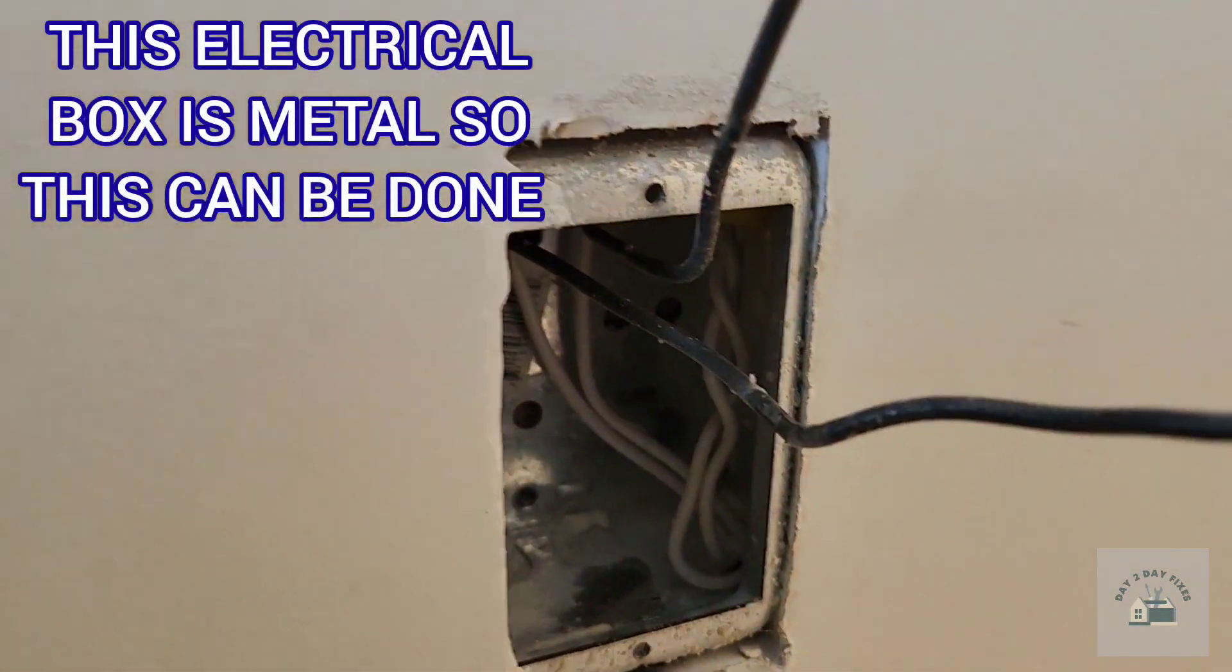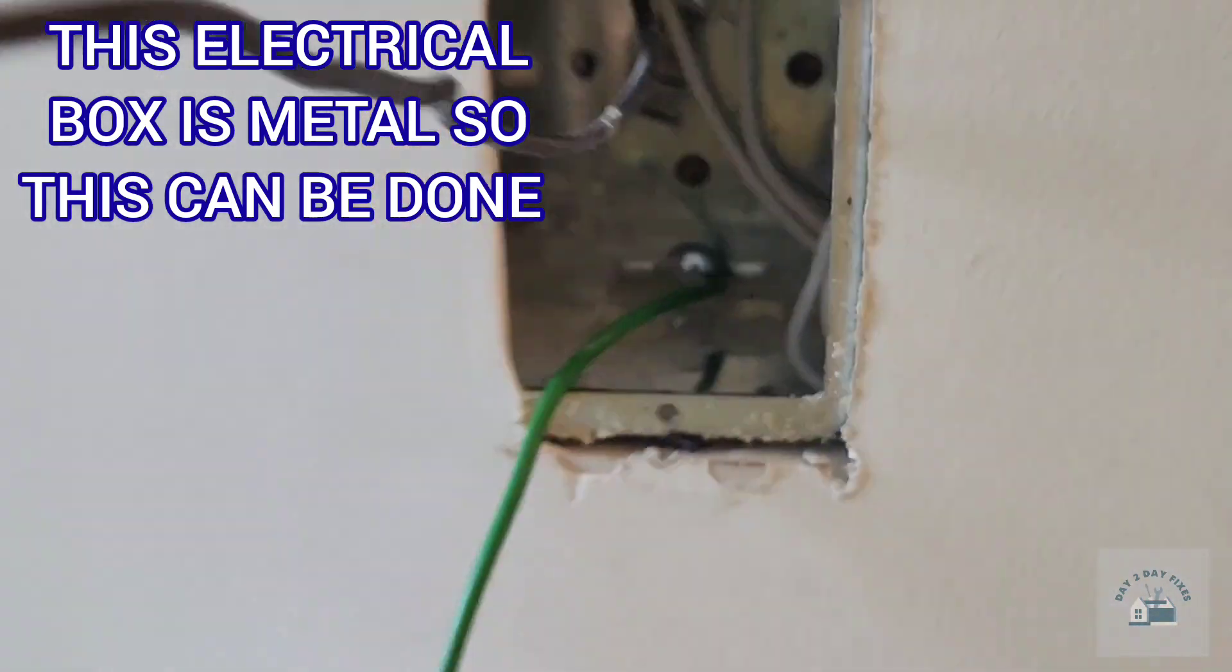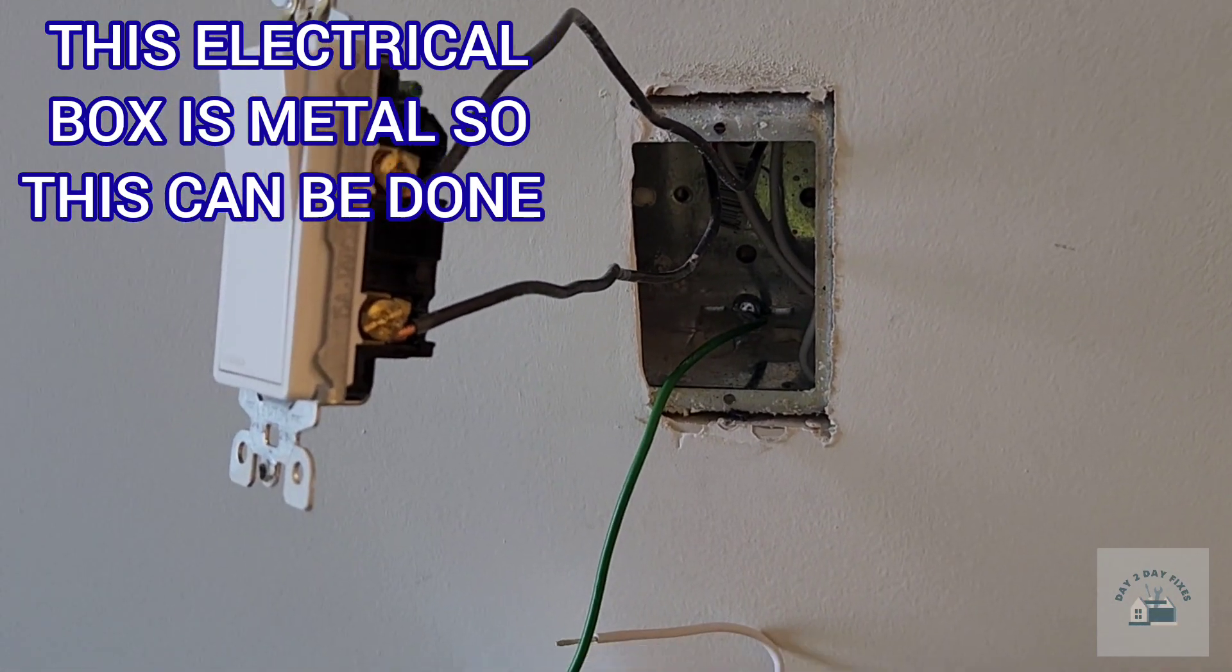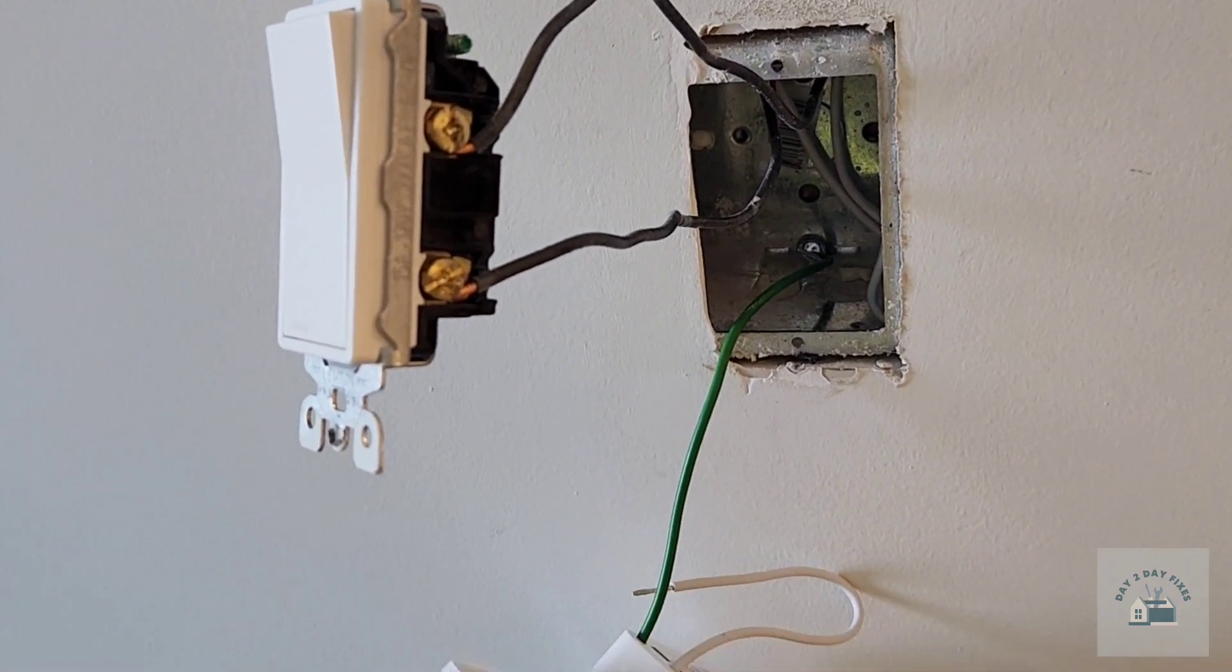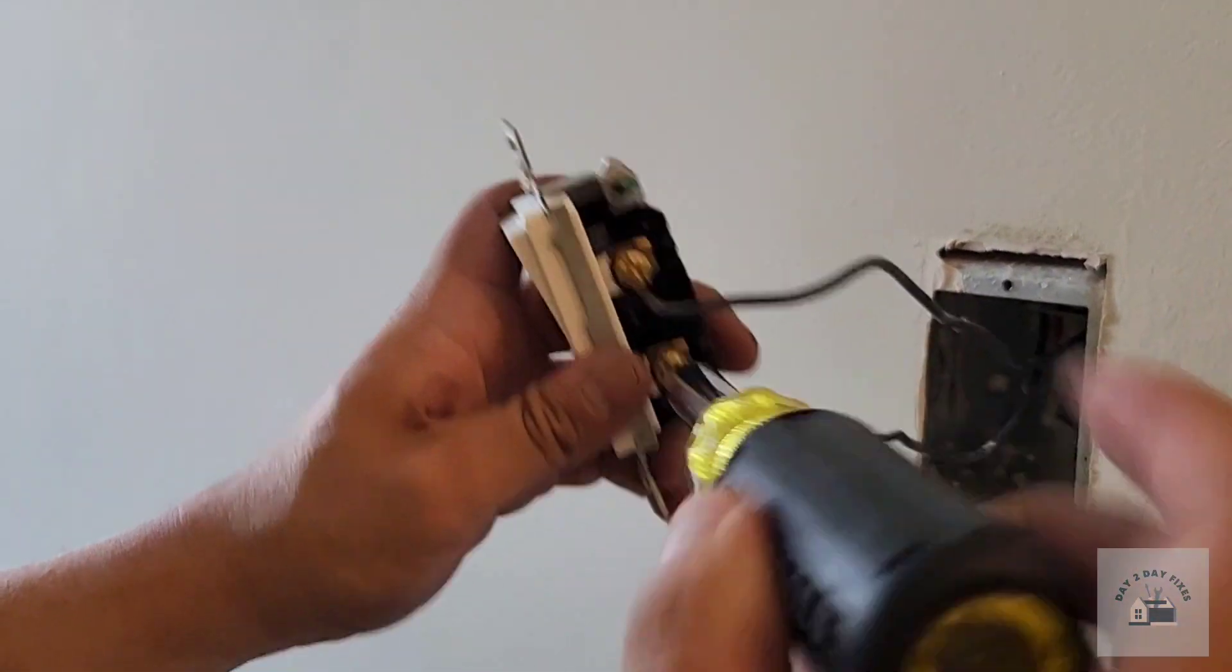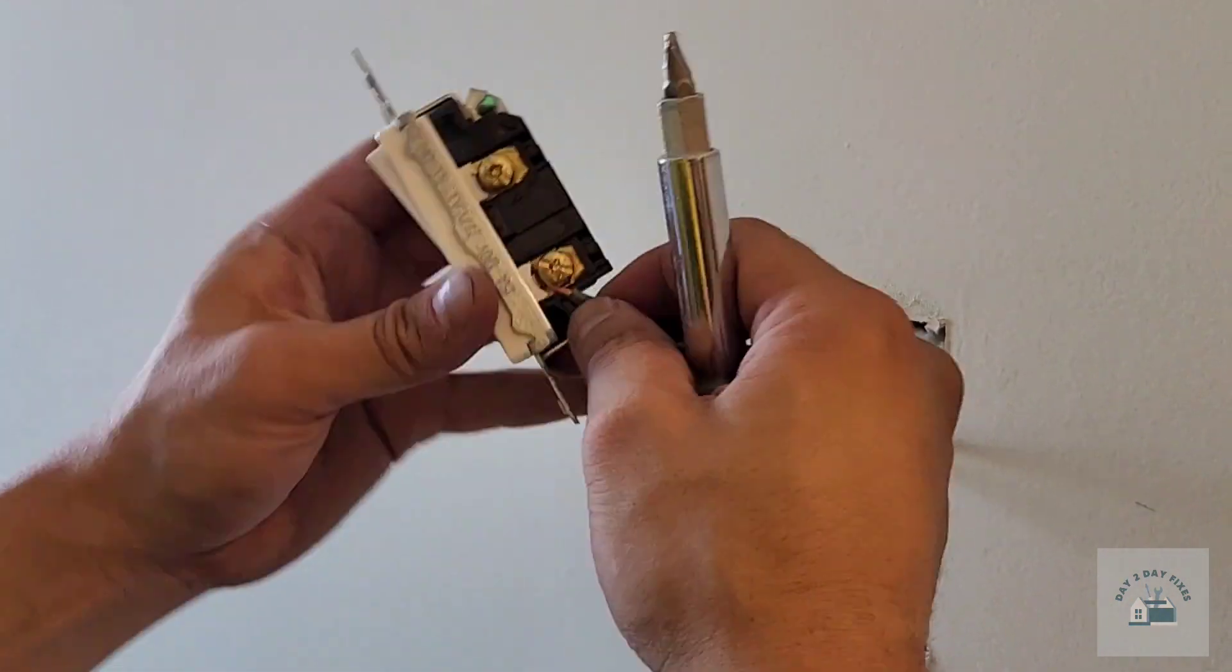But since the switch has a ground, I wanted to put a screw into an existing hole of the electrical box and tied the ground wire to that. Now we're going to remove the wires from the existing switch.